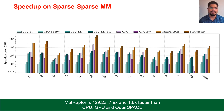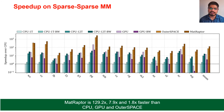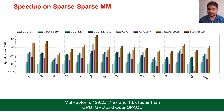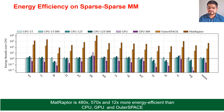Looking at performance results, we show speedup of different designs over a single-threaded CPU. CPU-1T is single-threaded CPU, CPU-1T-BW is with bandwidth normalization, CPU-12T and CPU-12T-BW are with 12 threads with and without bandwidth normalization, followed by GPU, GPU-BW, OuterSpace, and MatRaptor. For nearly all benchmarks, MatRaptor outperforms CPU, GPU, and OuterSpace. Overall, MatRaptor achieves 129.2x, 7.9x, and 1.8x speedup over CPU, GPU, and OuterSpace respectively, and 480x, 7570x, and 12x energy efficiency over CPU, GPU, and OuterSpace.